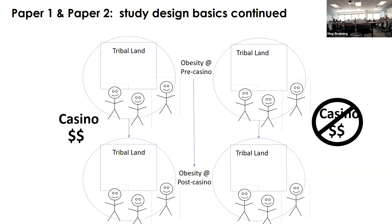There are very few things that differ between tribes that decide to open a casino and those that don't. The biggest factor is location — if your tribal land is near a highway, it's more likely the casino will be profitable and you'll open one. But location in this context is somewhat randomly assigned, given that Native Americans were forced off homelands into other lands well before anything related to what might make for a good casino site. We also compare communities to themselves over time rather than just looking at post-casino differences.